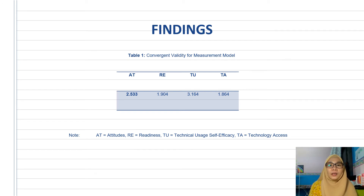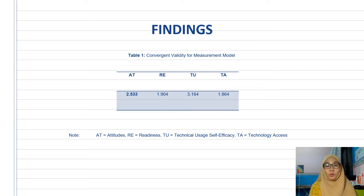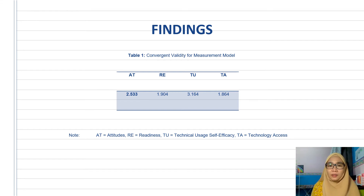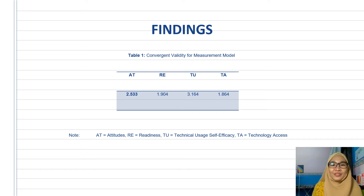Regarding findings, since the data uses a single source, a sequence of tests was adopted. We first tested common method bias by testing all variables regressed against a common variable — if the VIF is less than or equal to 3.3, there is no bias from single-source data. The analysis yielded VIF values less than 3.3, so single-source bias was not a serious issue with our data.